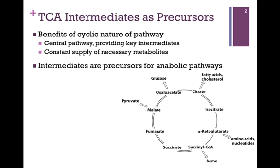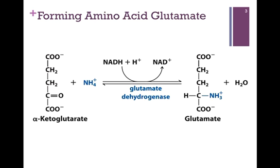Let's just look at one of these reactions. We can convert alpha-ketoglutarate to the amino acid glutamate. This is a reductive amination reaction. The amine group, highlighted in blue, is added to the carbonyl carbon, and that carbon is also reduced. Therefore, we're oxidizing NADH. As you can see through the double arrows, this is a readily reversible reaction. So we can either form the amino acid glutamate or readily convert that back to alpha-ketoglutarate.